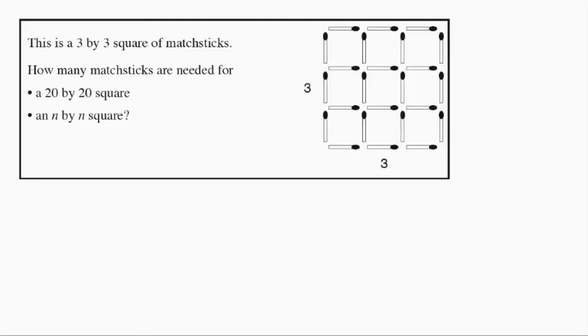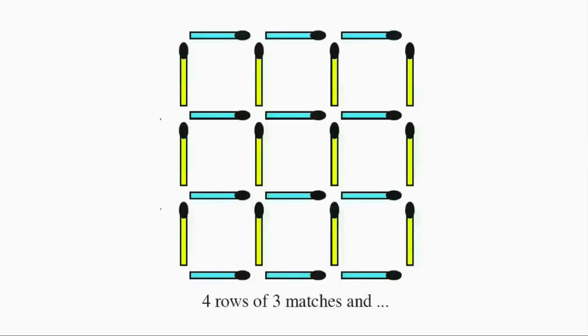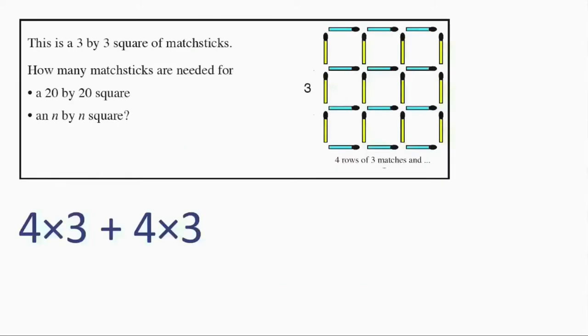For example, say we want to find the number of matchsticks in this 3×3 matchstick square. We could structure it into four rows of three matchsticks plus four columns of three matchsticks. In other words, there are 4×3 plus 4×3 matchsticks.